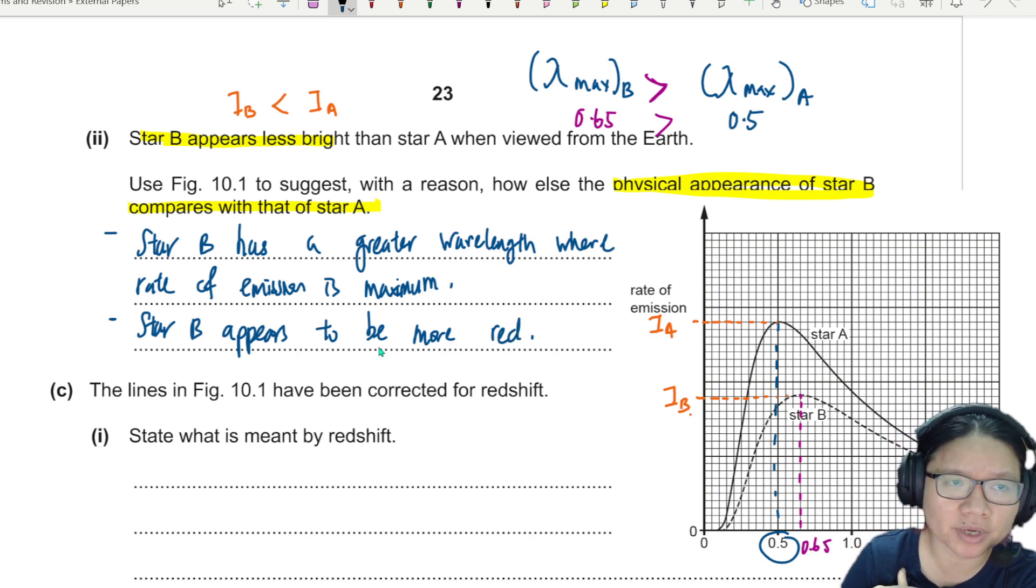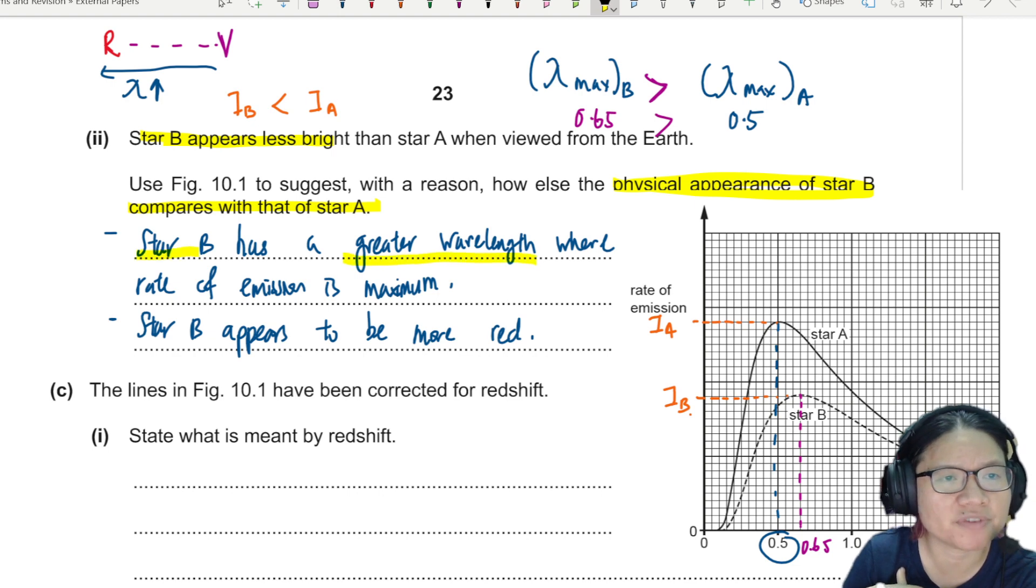This is not red shift. This is just a color difference. So you want to think about this, shorter wavelength. If you think of your rainbow color, you have red, blah, blah, blah, blah, violet. So when you travel here, lambda increase. So since star B has a greater wavelength, 0.65, so it will appear to be more red or red. All right. Remember blue flame is always hotter.